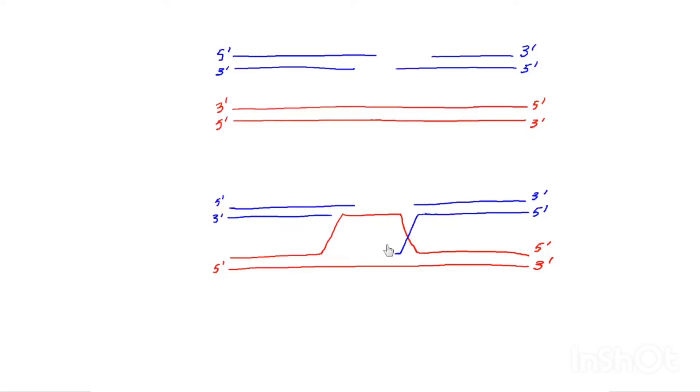And the reason it's called a D-loop is if you're falling asleep during this lecture, your head will tilt to 90 degrees, and you'll suddenly wake up to see the letter D.